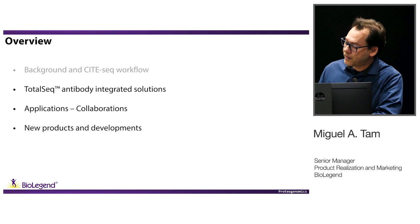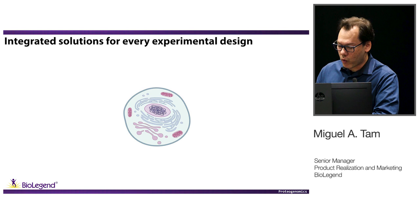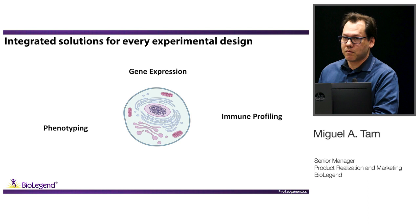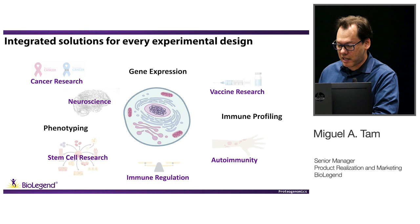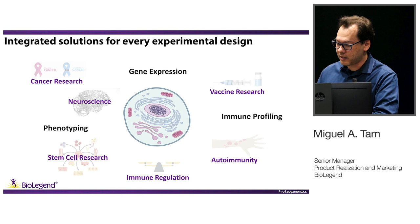After giving some background on the technology, which was named CITE-seq when first published, I want to explain the reagents and applications we have for them. What we really want to provide is an integrated solution for any kind of experiment interrogating single cells. We want to support immunophenotyping, gene expression, immune profiling, and any type of research — cancer research, stem cell research, autoimmunity, immune regulation, vaccine research — with our reagents.